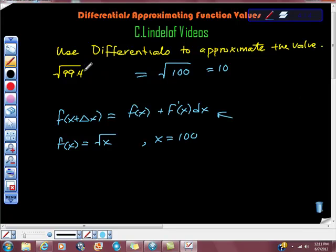the change in x is, well, the number I need, 99.4, so 99.4 minus 100 equals negative 0.6, doesn't it?